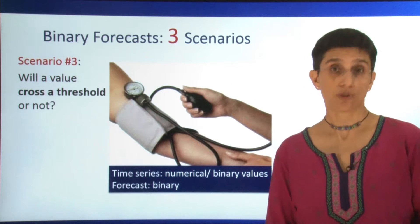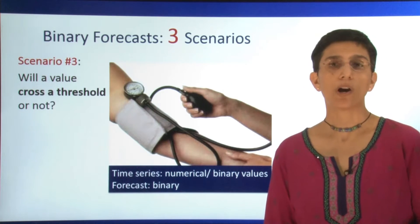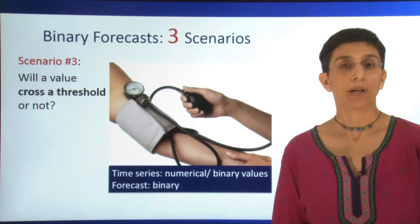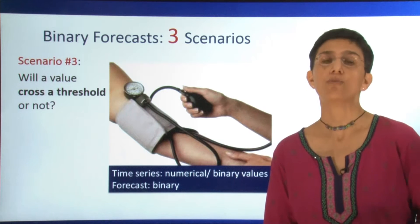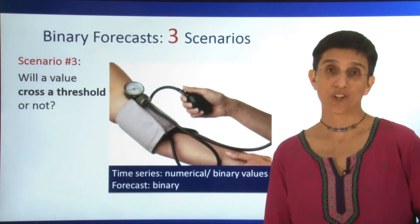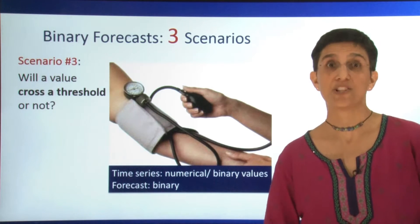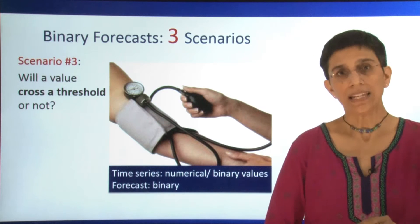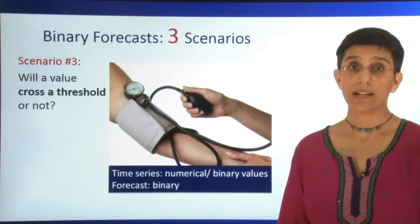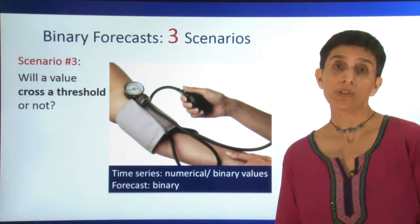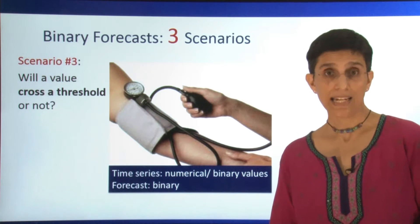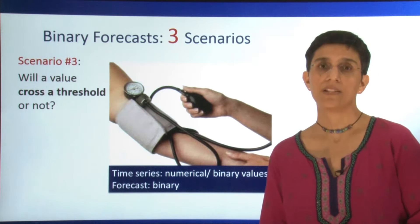The third scenario, which is also very common, is where our data are numerical, such as blood pressure, but what we care about is whether this numerical value crosses a threshold of interest. For example, whether our blood pressure crosses some threshold that makes it dangerous for us. So here we have numerical data, or sometimes we just have the binary data — maybe we have information only on whether our blood pressure exceeded that threshold or not. In any case, our forecast is intended to be binary.